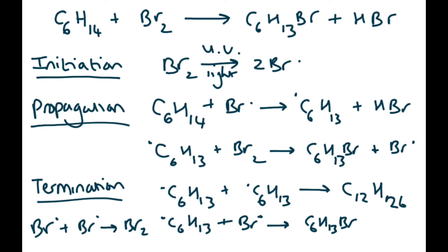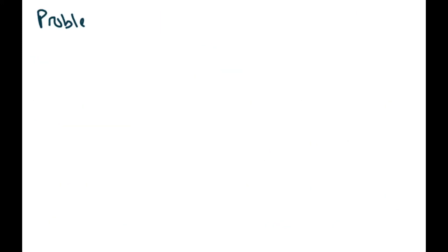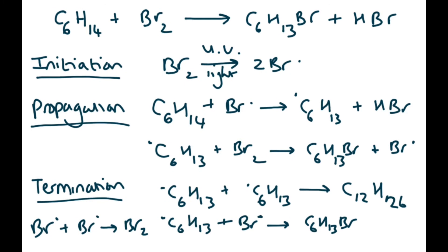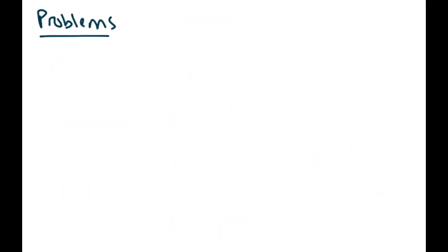Examiners are unlikely to ask you about methane — they're more likely to ask something more complicated. There are some problems with this mechanism. For example, the reaction is called mono substitution when you substitute just one hydrogen, but how can you control that? You might get multiple substitution — that's a problem.